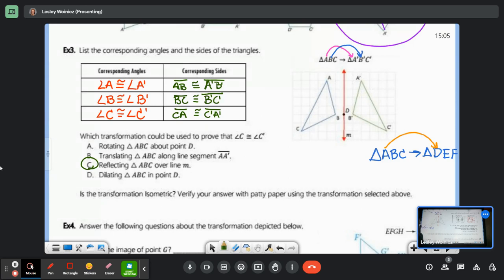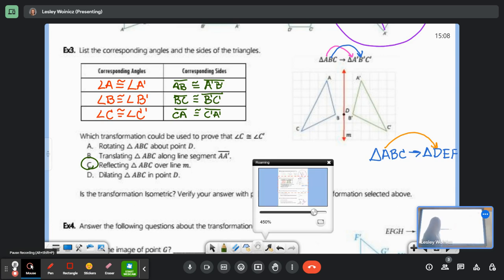Is this transformation isometric? Verify your answer with patty paper. I gave you guys fistfuls of patty paper. Go ahead and grab some. If you need a sheet of patty paper, it's over there. Go ahead and trace it and see if it maps.